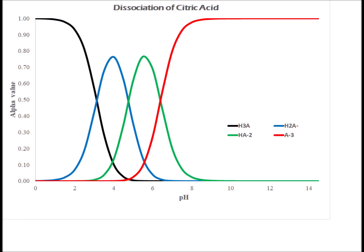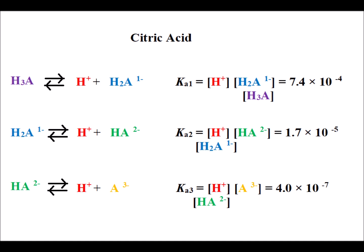Here is a graph of the alpha values for citric acid. It is also triprotic like phosphoric acid, but notice how close together the three different events are. This reflects the fact that the pKa values of the three different acidic protons in citric acid have similar acid dissociation constants — not nearly as separated as they are in the case of phosphoric acid.